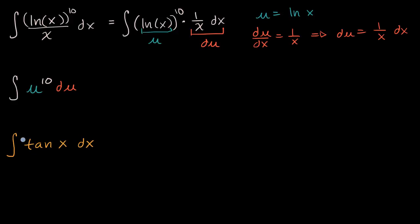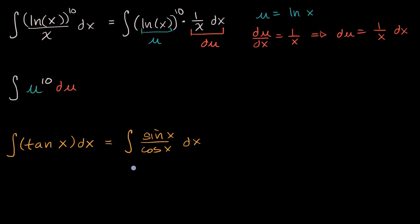Does u substitution apply here? At first you might say, well I just have tangent of x — where is its derivative? But one interesting thing to do is rewrite tangent in terms of sine and cosine. So we write this as the integral of sine of x over cosine of x dx. Now, where does u substitution apply? You could note the derivative of sine of x is cosine of x, but here we're dividing by the derivative rather than multiplying by it.